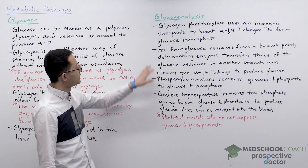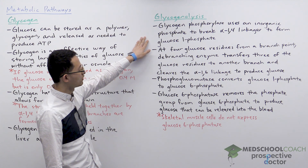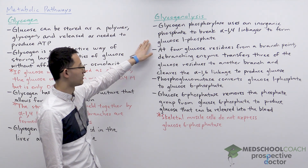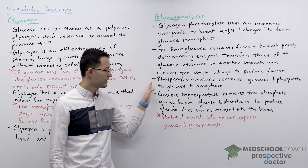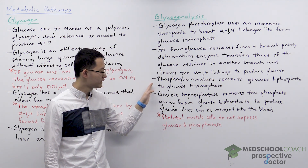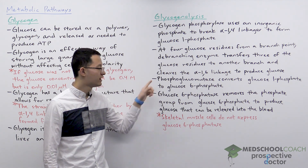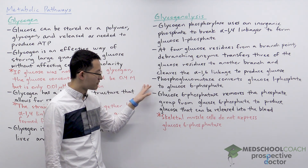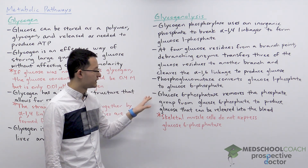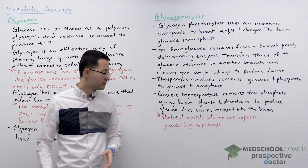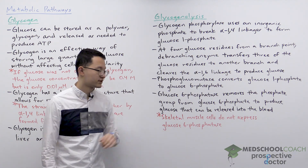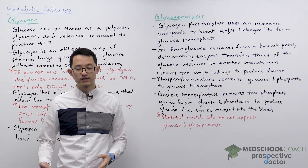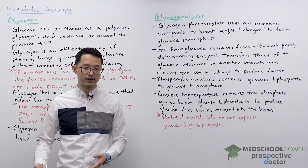Glycogen phosphorylase produces a lot of glucose-1-phosphate molecules. The glucose-1-phosphate is converted to glucose-6-phosphate by the enzyme phosphoglucomutase. This glucose-6-phosphate molecule can then have its phosphate group removed by glucose-6-phosphatase to produce glucose molecules that can then be released into the blood.